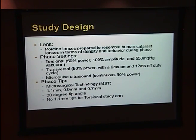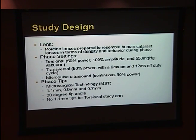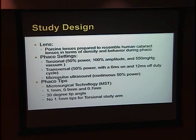In our study, we obtained porcine lenses and prepared them according to a previously validated method to resemble human cataract lenses in regards to density and behavior during FACO. We employed three different FACO systems — a torsional, a transversal, and a micropulse system — to study three different FACO tips. The settings were the same as previously studied to maximize extraction efficiency. All tips were from Microsurgical Technology: the 1.1 mm, the 0.9 mm, and the 0.7 mm, all with a 30-degree tip angle.